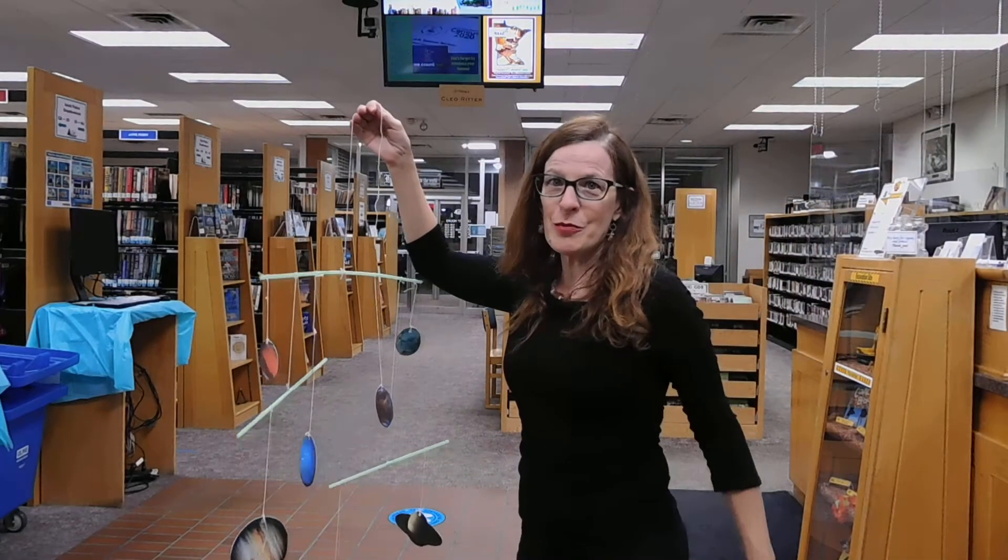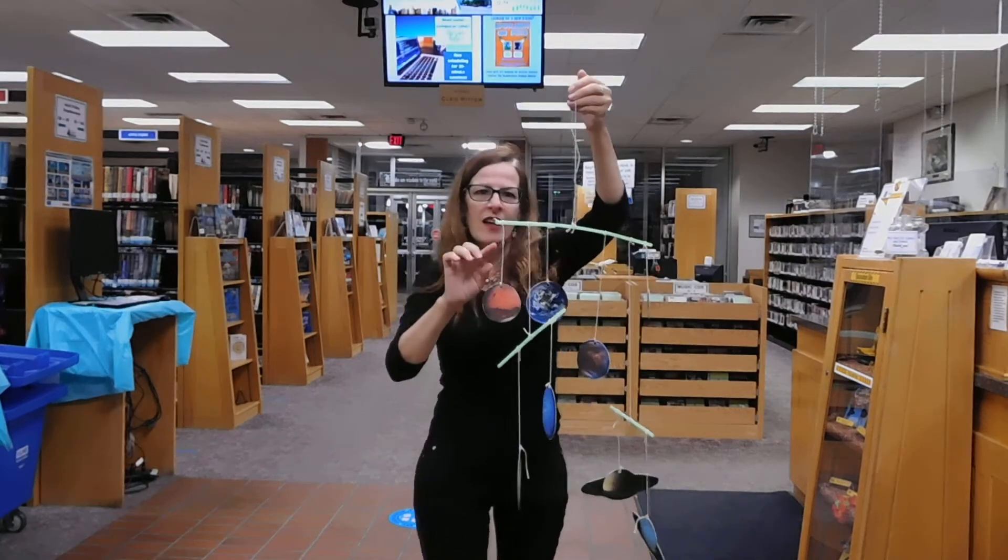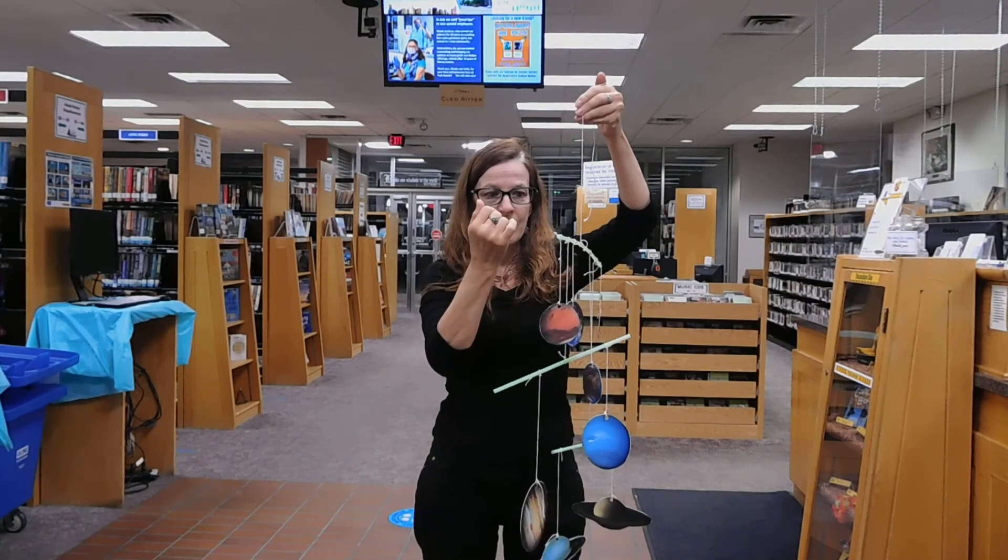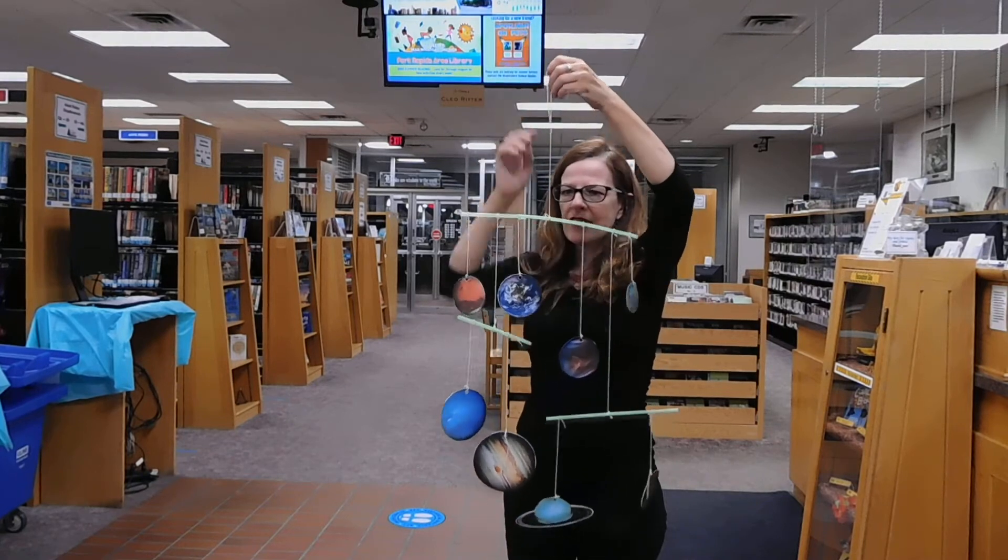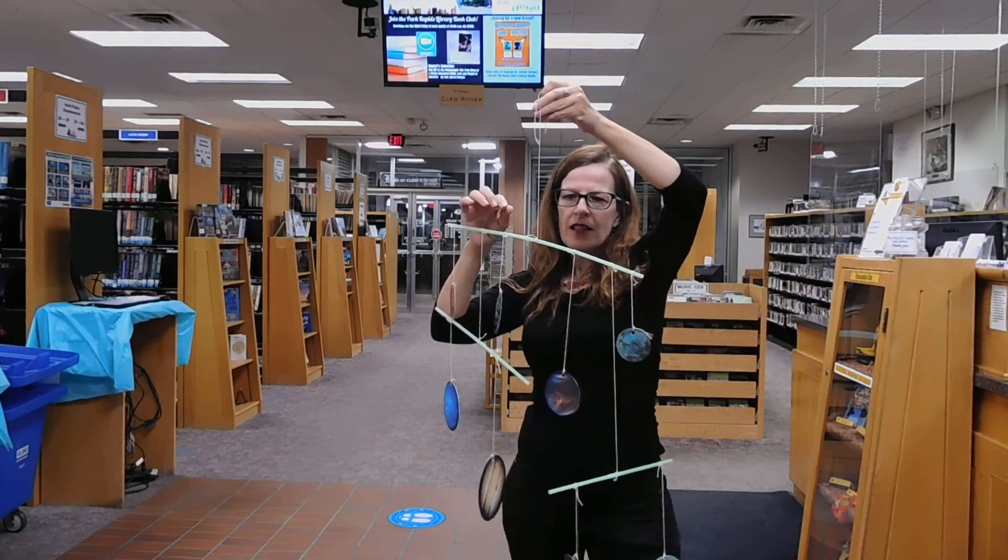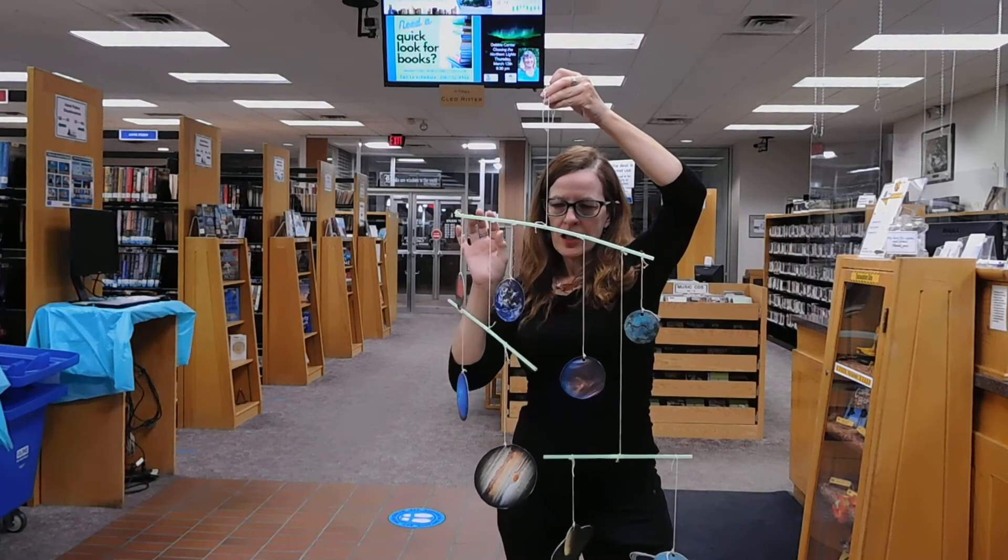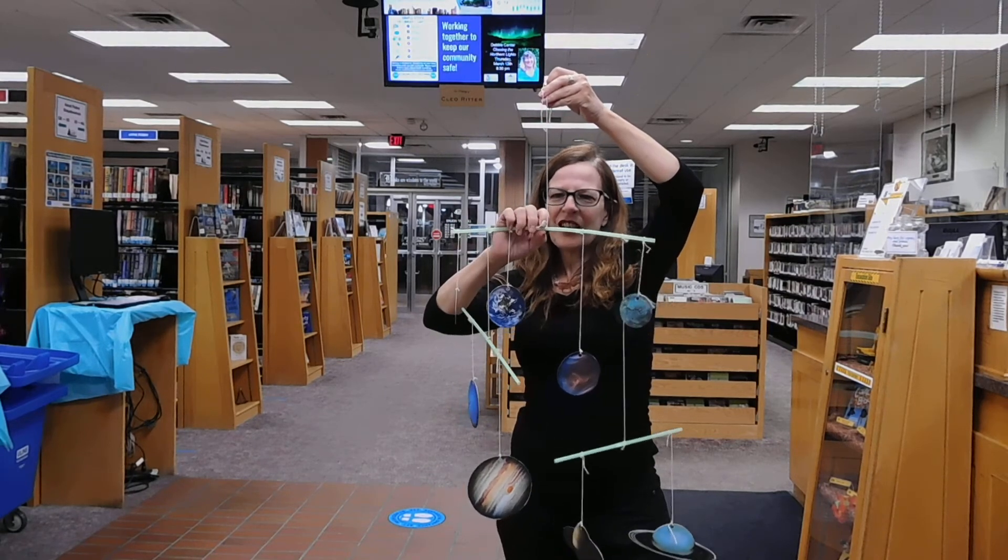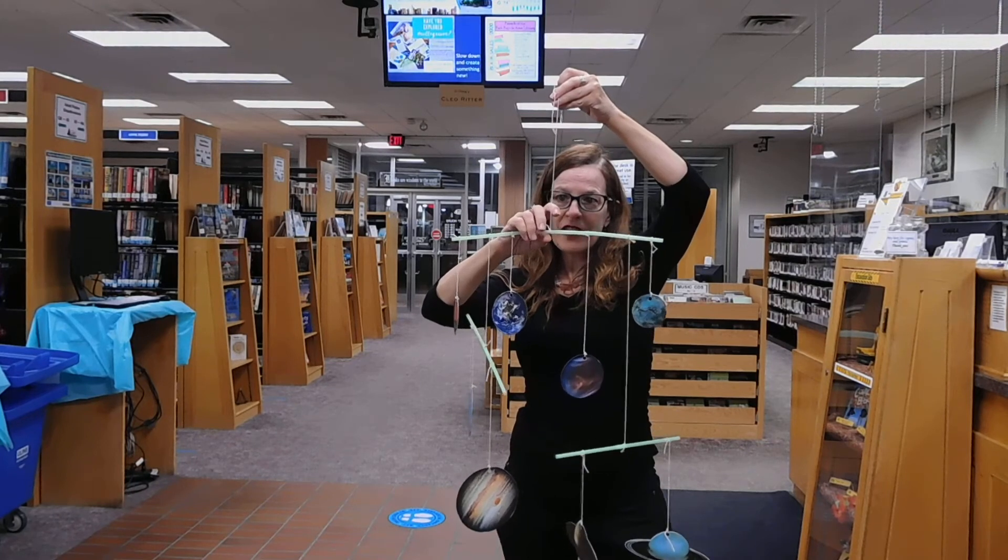So I've completed the mobile and it is hanging pretty well, I have to say. So the string that is at the center of the bar going across acts as our pivot. So that is where the center of the balance will be. And when you are arranging your mobile, you want to keep the weight equal on both sides of that pivot.